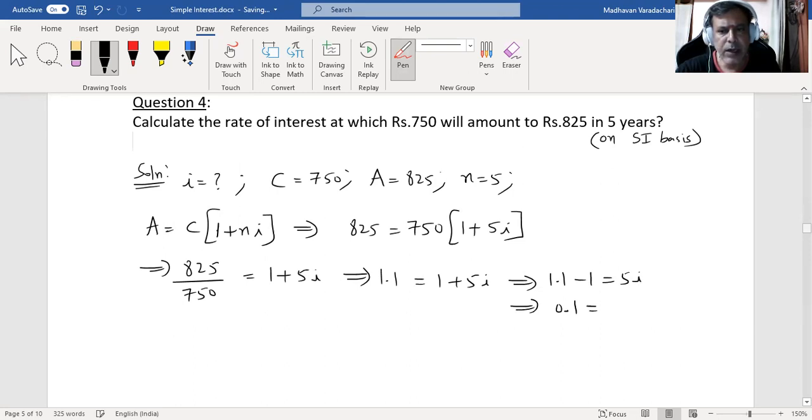0.1 divided by 5 we get 0.02, which is nothing but 2 percent per annum.